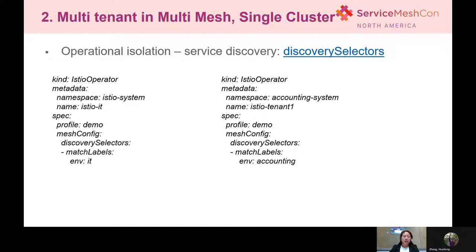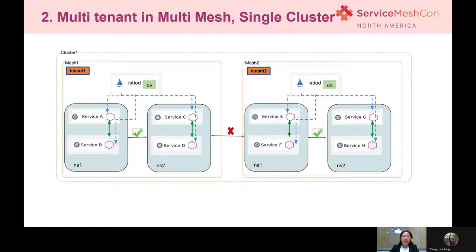One thing to mention is that in Istio upstream, multi-mesh in a single cluster isn't supported, because in every namespace IstioD will create a secret to host the root cert for all tenants across all meshes. To support this solution, we actually have a patched solution to respect the revision in your service mesh installation. If you are interested, you can find the link about the patched solution at the end of the presentation. However, this solution also has some upgrade issues — if you want to upgrade Istio to a newer version in the future, there will be problems.